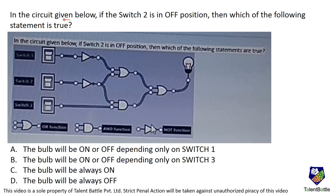In the circuit given below, if switch 2 is in the off position, which of the following statements is true? Switch 2 is compulsorily off. Off means 0 and on means 1. This is the symbol for the OR function, this is the symbol for the AND function, and this is the symbol for the NOT function.